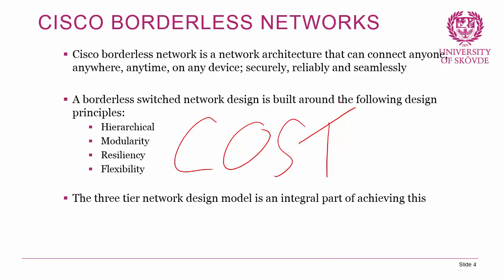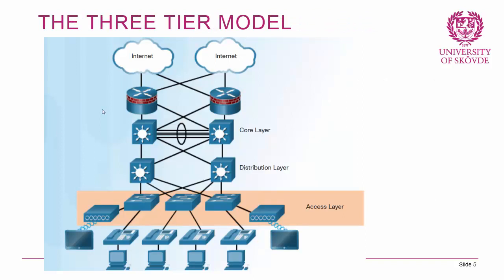The three-tier network design model is an integral part of achieving a Cisco borderless network. Starting from the bottom, we have the access layer — the network edge that connects end users to the network, with lots of switch ports to facilitate many devices, and potentially power over Ethernet to power IP phones. Then the distribution layer aggregates broadcast domains and provides an interface between the core and access layers, with high availability using redundant switches. Finally, the core layer on top is the network backbone, providing fault isolation and high-speed backbone connectivity.